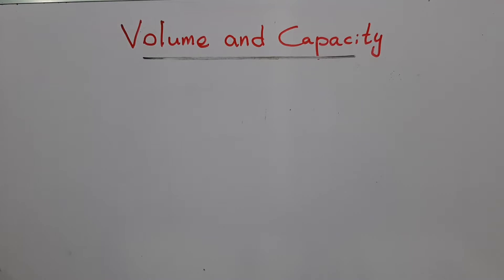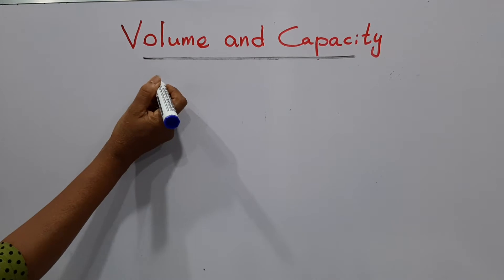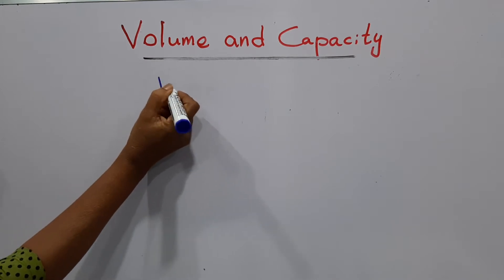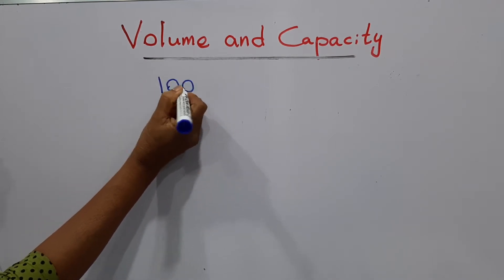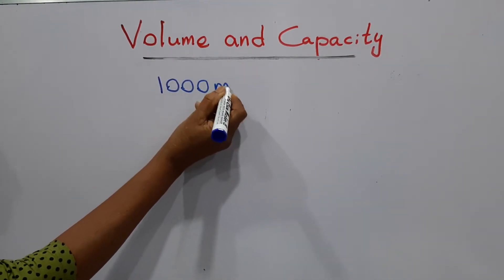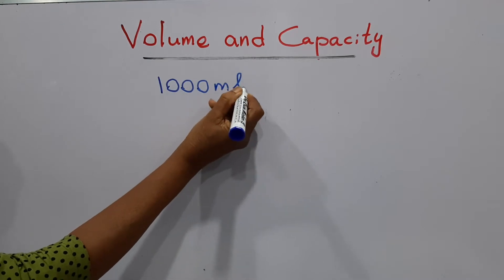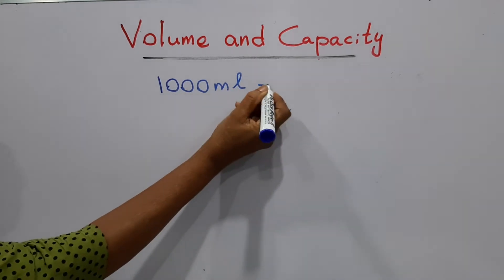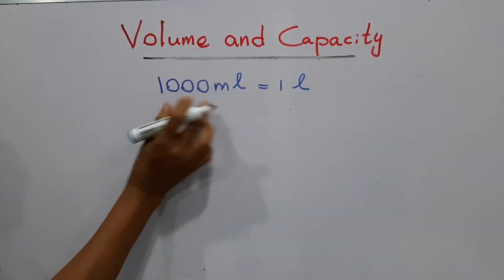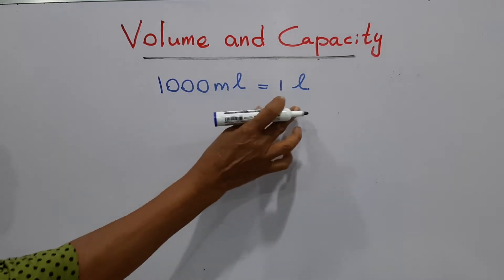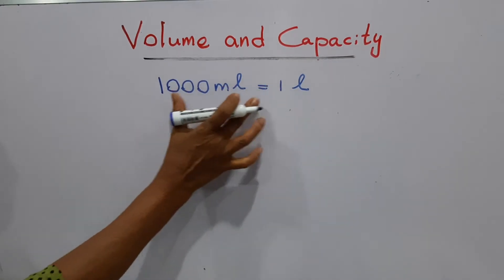Today our lesson is volume and capacity. These are the standard units to measure volume and capacity. We use milliliters and liters. One thousand milliliters equal one liter.